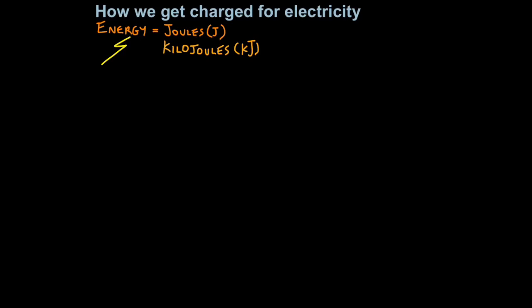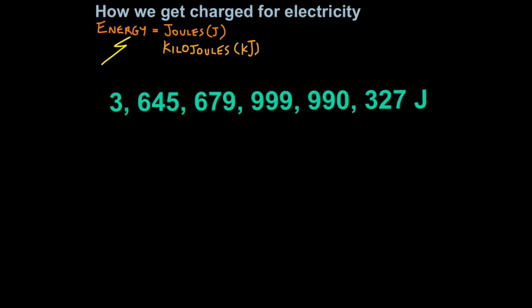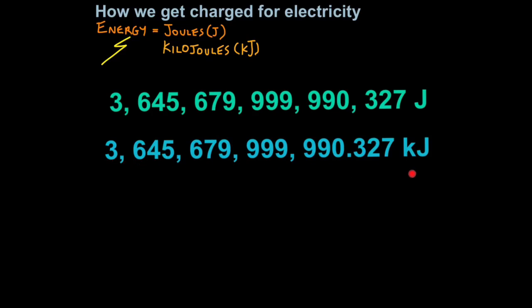The problem with using joules as a unit here is that joules are so small that if we received information in terms of joules on our electricity bill, numbers would look huge and be very difficult to understand. Even using kilojoules doesn't remedy this problem. So we need to use a more sensible unit.